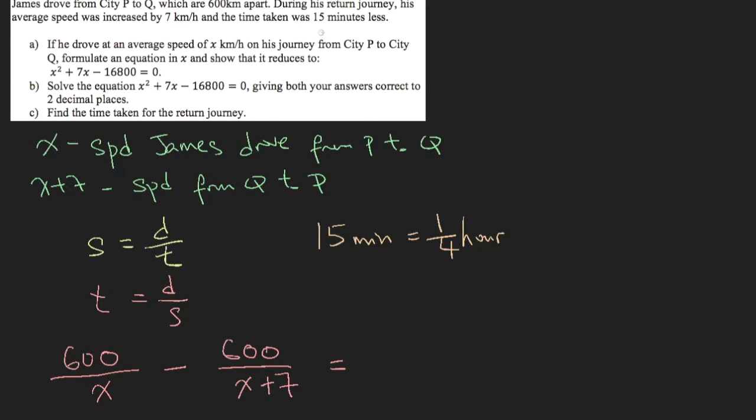So the question tells you that it is 15 minutes faster. So the longer time minus the shorter time is 15 minutes, but you have to write one quarter because everything here is in terms of hours.